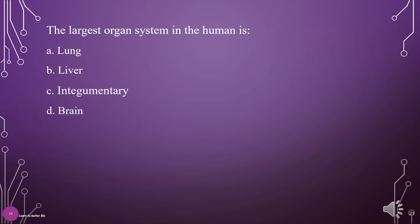The largest organ system in the human is: A. Lung, B. Liver, C. Integumentary, D. Brain. The answer is C: Integumentary.